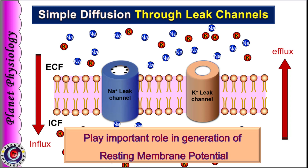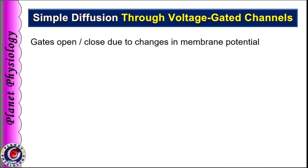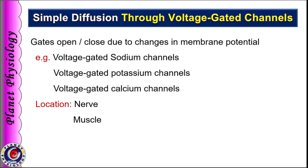Now let us study the role of gated channels in simple diffusion. As studied previously, gates can open or close in response to specific stimuli. First are voltage gated channels. As the name suggests, gates of these channels open or close due to changes in the voltage across the cell membrane, i.e., changes in the resting membrane potential. Examples include voltage gated sodium channels, voltage gated potassium channels, and voltage gated calcium channels.